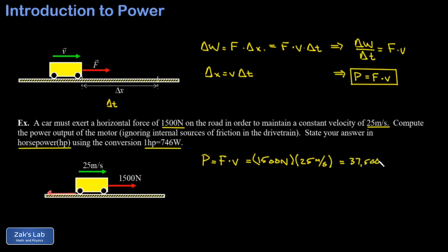When I run the numbers on this I get 37,500 watts. That might sound like a lot, but when it comes to cars we can really get perspective by changing to horsepower. I take my 37,500 watts and multiply by the conversion factor: one horsepower for every 746 watts.